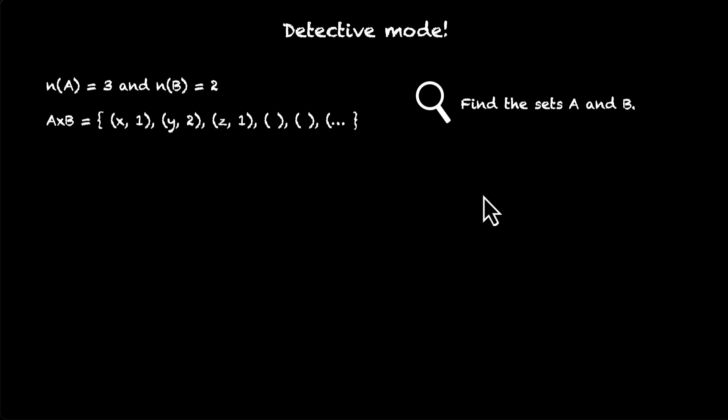Okay, so let's do this together. One thing that will be useful for us is remembering that the Cartesian product contains ordered pairs. x, 1, y, 2, and z, 1, they're all ordered pairs. What does that mean? That means that their first element is coming from the set A and their second elements are coming from the set B.